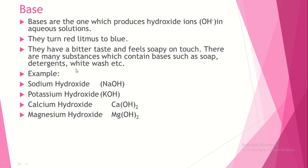The difference between acid and base: acids produce hydrogen ions in water while bases produce hydroxide ions in water. Acids turn blue litmus to red, while bases turn red litmus to blue. Acids are sour in taste while bases are bitter in taste. Examples of acids are hydrochloric acid and sulfuric acid; examples of bases are sodium hydroxide and potassium hydroxide.